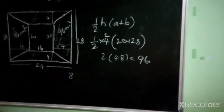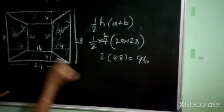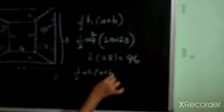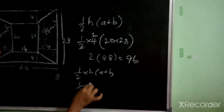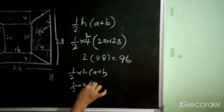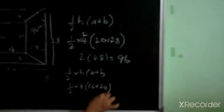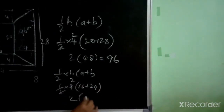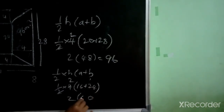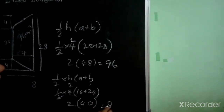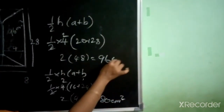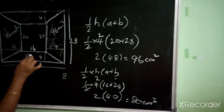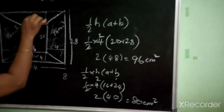Now, for the side trapezoids, the formula is half times height times (a plus b). Half times 4 times (16 plus 24) equals half times 4 times 40, which gives 80 cm². This is the area of the side trapezoids — 80 cm².